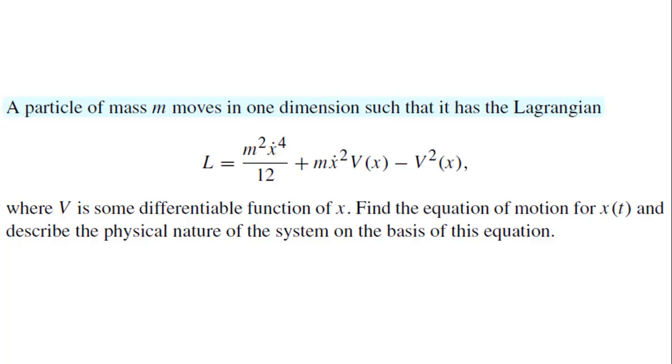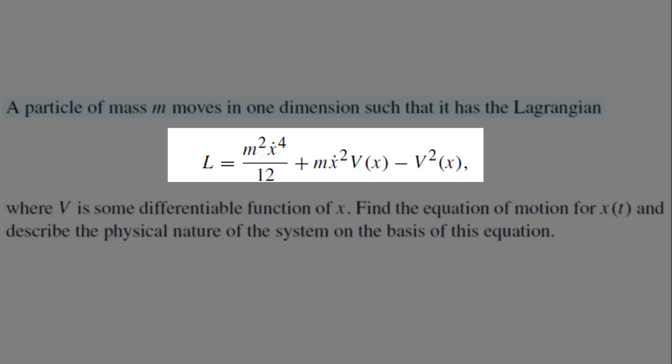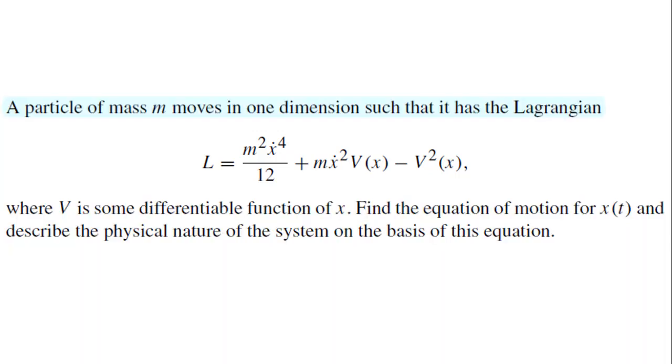I am back with another problem, problem number 20 in the exercise of Classical Mechanics by Goldstein. In this problem, the Lagrangian for a system is given and we are asked to find the equation of motion in terms of x of t and also describe the physical nature of the system.